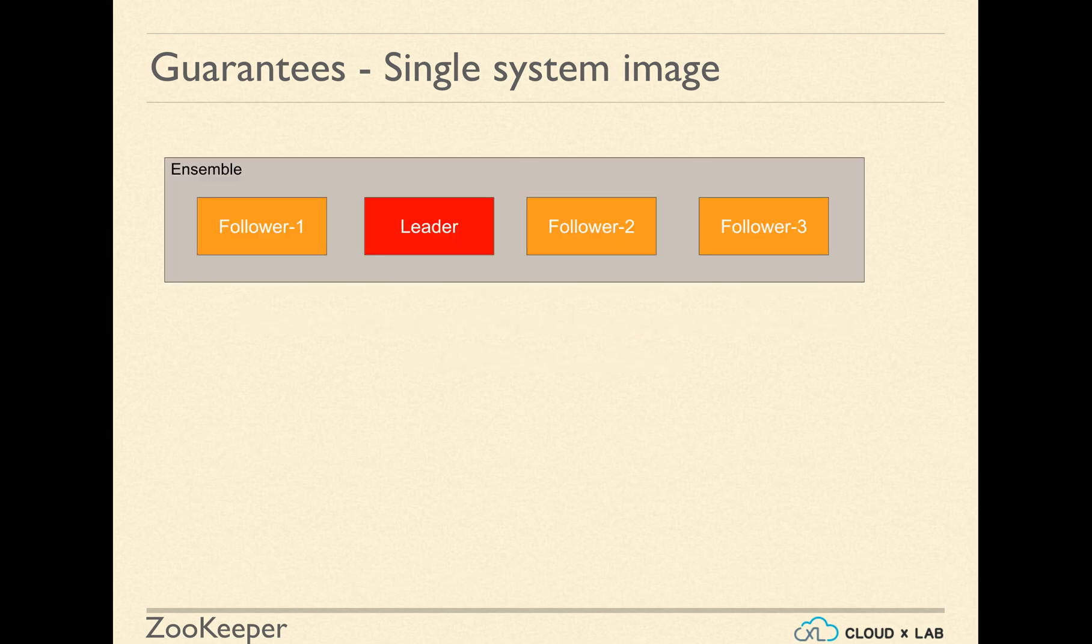Let us take a simple example of an ensemble. An ensemble is a group of machines participating in ZooKeeper in order to provide high availability. In this example, the ensemble has a total of four machines. There are three followers and one leader.